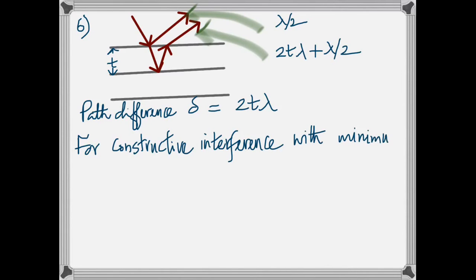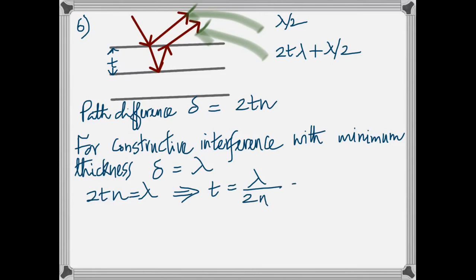Now for constructive interference, you know that it should be equal to m lambda. And m should be 1, because it's minimum thickness, so you go for the minimum value of m which is 1. Now I've corrected it, it should be 2nt. It should be 2nt even here. It was supposed to be corrected. Anyway, it's 2nt. And you calculate t.